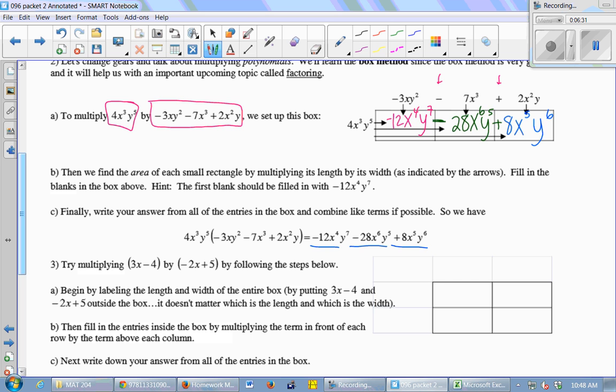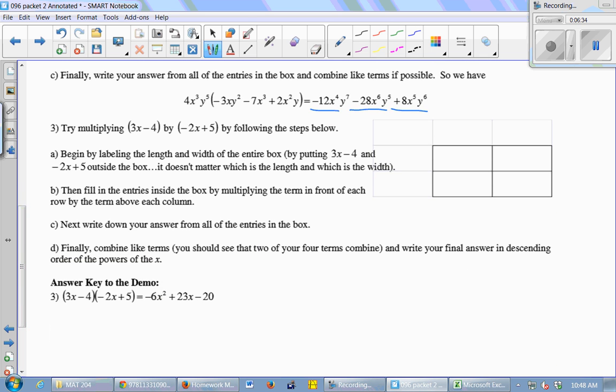All right, one more example. I'm going to multiply 3x minus 4 by negative 2x plus 5 using the box method. So each term that's separated by an addition sign or a subtraction sign gets its own box. So I'm going to have 3x minus 4. And then negative 2x plus 5. And I think I might put the negative with the 4. I think that'll be clearer. 3x minus 4. Then I'm going to multiply and find the area of each little box.